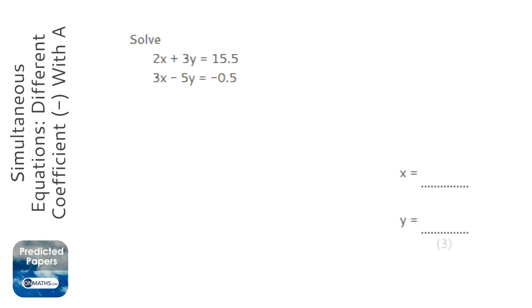Okay, so we've got a pair of simultaneous equations and we've got an issue because we don't have the same coefficients for the x or the y, so we're going to have to make the same coefficients.